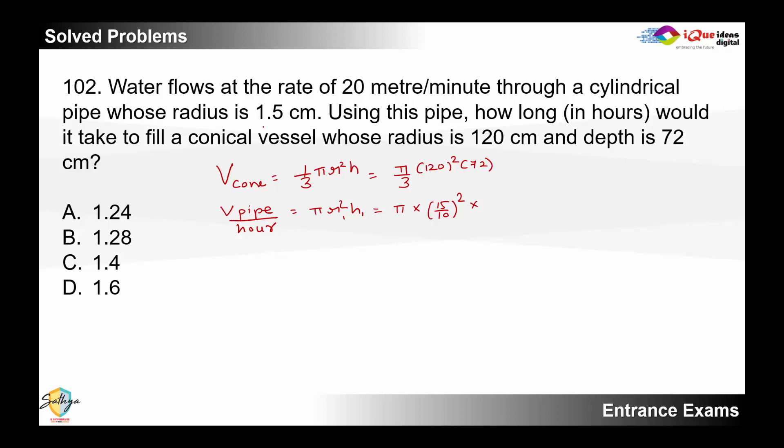Now because the other unit is centimeter, I convert 20 meters into 2000 centimeters and the rate is per minute but I'm calculating per hour so I simply multiply this by 60. So now if I divide the total volume of the cone by the rate of flow through the pipe I should get my answer.